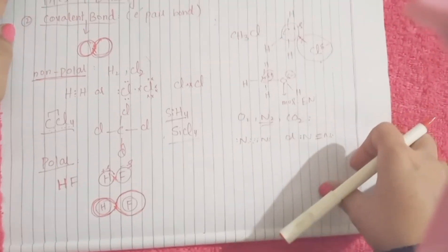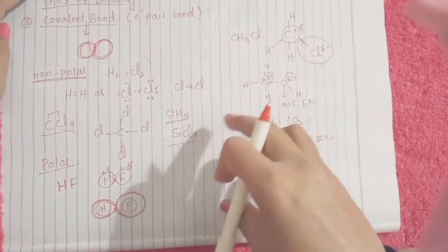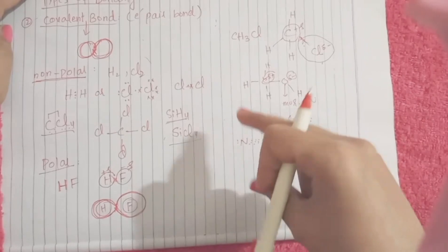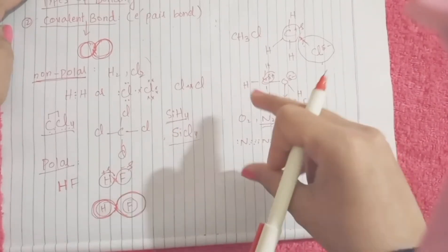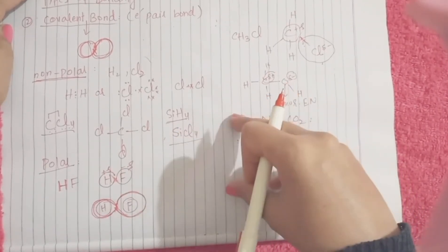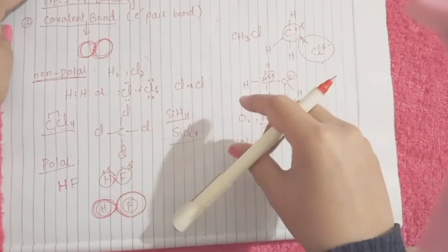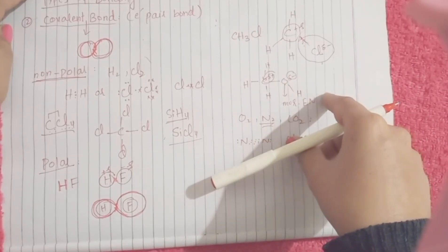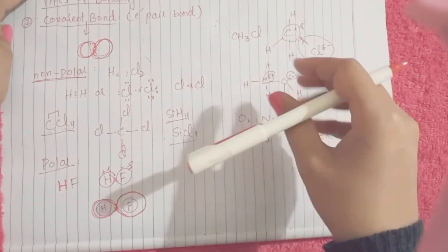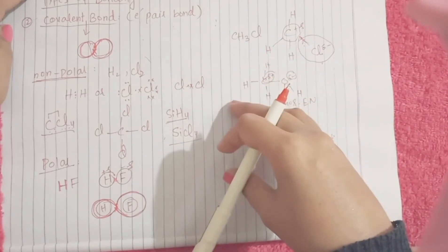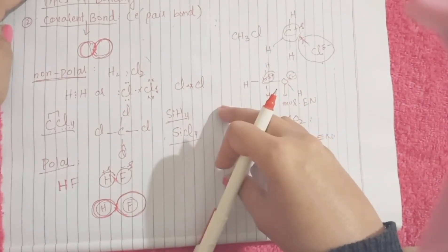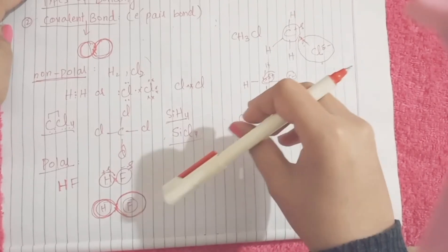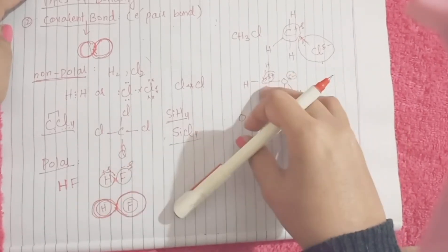So a covalent bond is actually the sharing of an electron pair between atoms. An ionic bond was a bond formed between atoms by the release of an electron from one atom and the acceptance of an electron by another atom. A bond formed due to ions is an ionic bond, and a bond formed by the sharing of electrons is called a covalent bond.